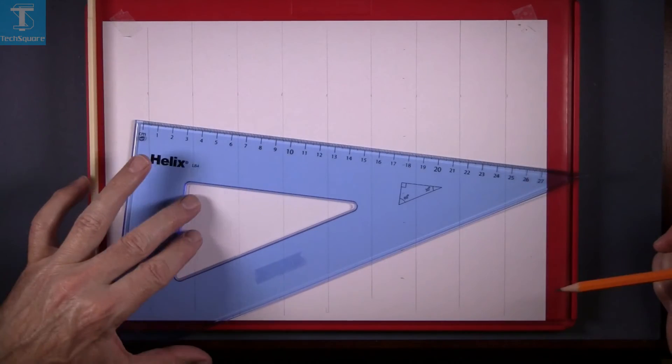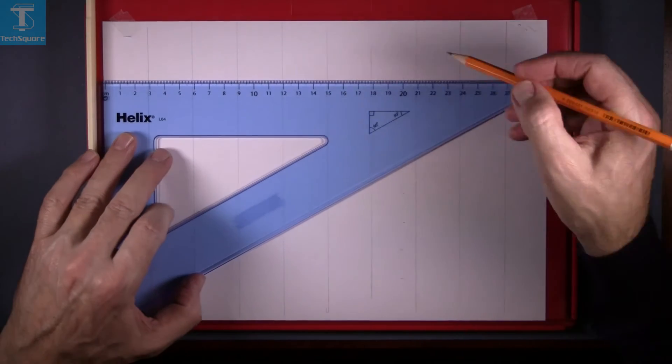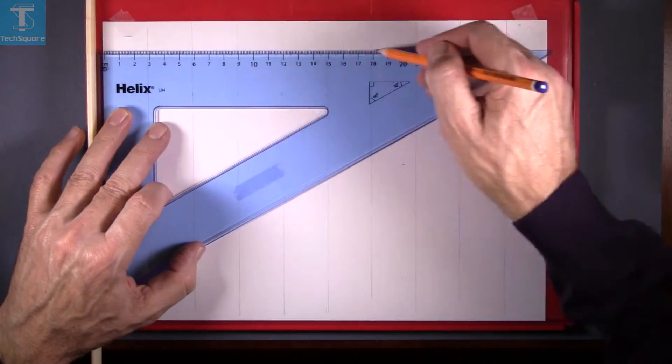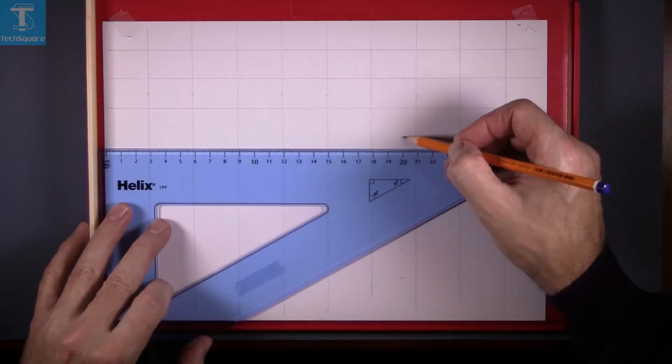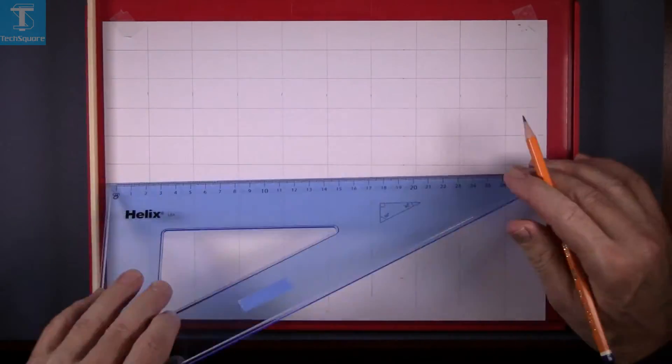Now with the set square tight against the guide rule, slide it up to the first point here and draw your line across the sheet. Repeat that until you get the grid drawn in completely.